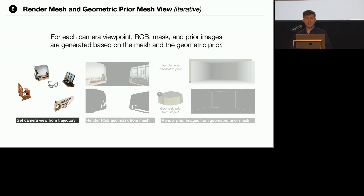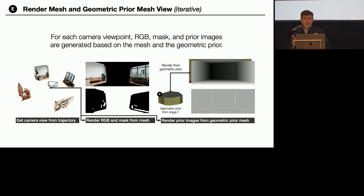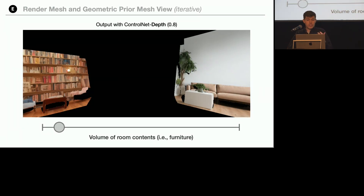Entering the second stage of the pipeline, for each step, a view of the current state of the mesh is rendered, resulting in an RGB image and a mask indicating missing regions of the mesh. From the same viewpoint, a depth map of the geometric prior mesh is rendered and used as a depth prior image. A layout prior image is calculated based on the depth gradients to define an outline of the space — essentially notating where the walls and floor should be. These priors are then used for the image completion step using the pre-trained ControlNet depth model, as well as a custom-trained ControlNet layout model that guides the shape of the space without limiting generation of furniture, which the depth model would do. By leveraging multi-ControlNet, we can effectively regulate a parameter that controls the volume of contents within a room.